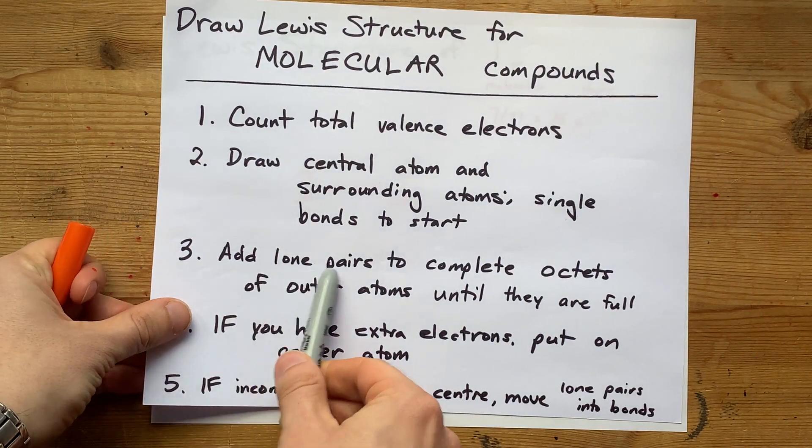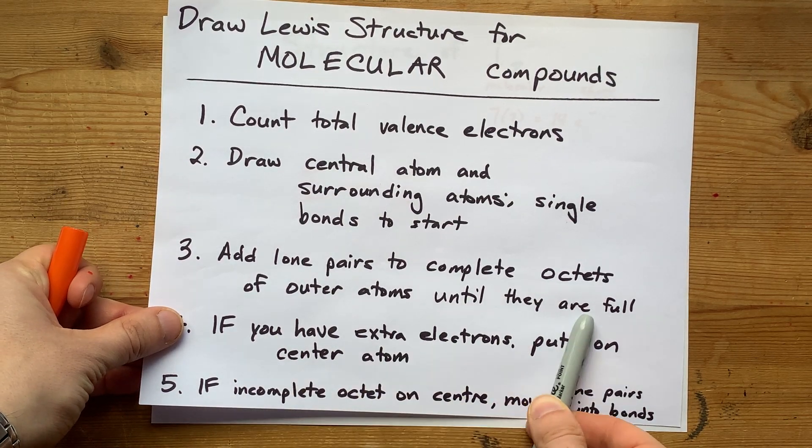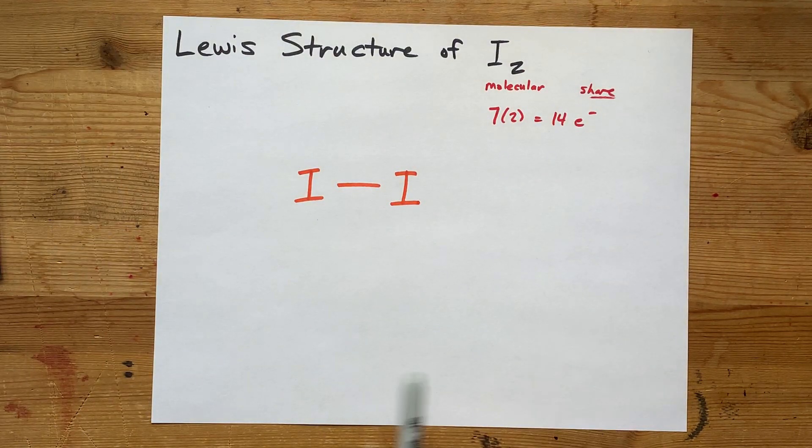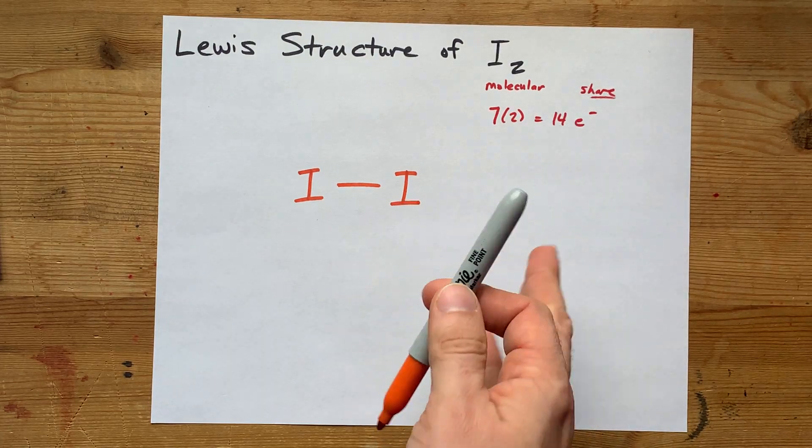I'm going to add lone pairs to complete the octets of the outer atoms until they are full. Now I'm also going to be careful that I don't go over 14 electrons total.